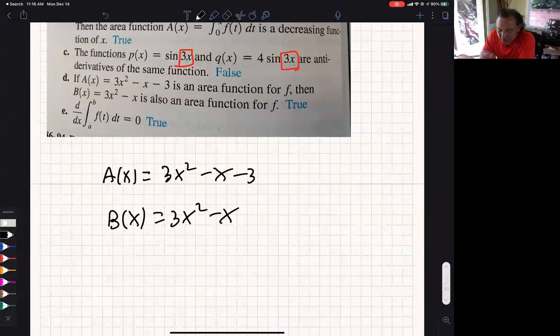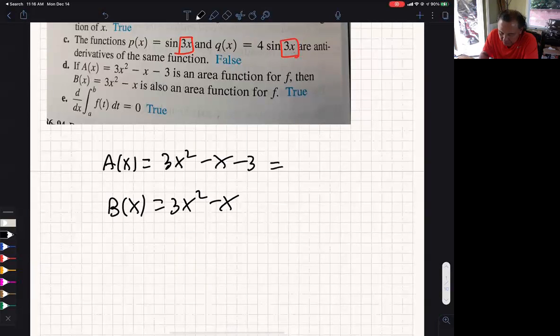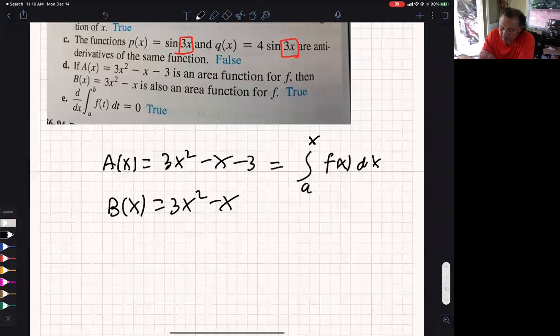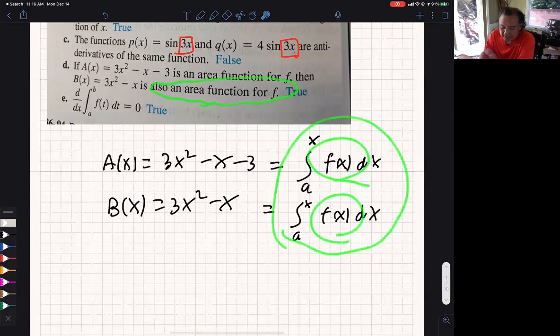So it's saying these are the area functions. In other words, these came from something else. So the area function for this would have been an integral from some value, I'm just going to call it a to some value x of some function I will call f(x). And this one would have come from a to x of some function f(x) because they're claiming it's an area function for the same function. So these are area functions for the same function.